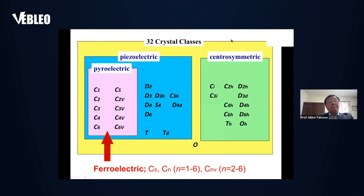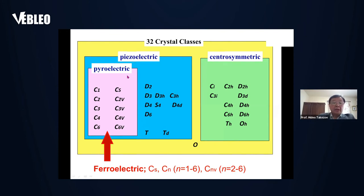You know that 32 crystal classes exist with different point symmetries. Among them, only 10 — namely C1 through C6, Cs, and C2v through C6v — can show ferroelectric or pyroelectric behavior. So to have a ferroelectric liquid crystal, the liquid crystal material must have the symmetry of one of these classes.